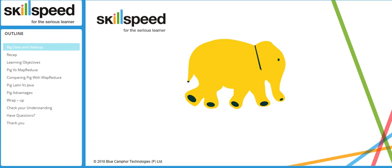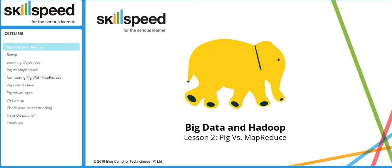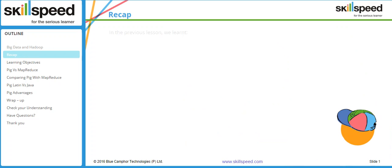Welcome to lesson number two, module six of the Big Data and Hadoop Developer course. In this lesson we are going to be comparing Pig versus MapReduce. Before proceeding, let's have a quick recap of the previous lesson. In the previous lesson we learned what exactly Pig is, its use and need, and we had a look at some of the scenarios where Pig cannot be used.